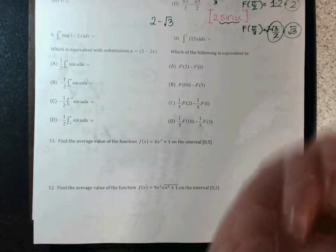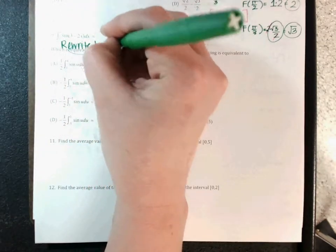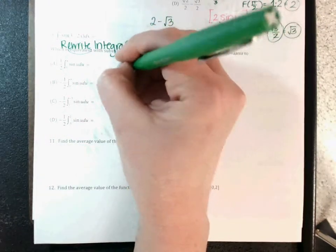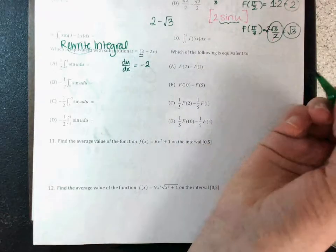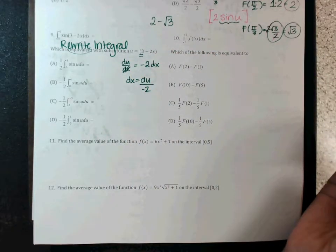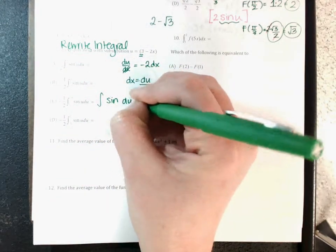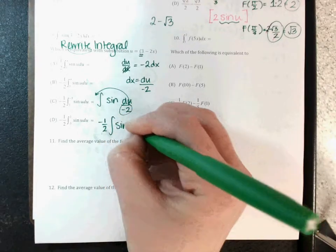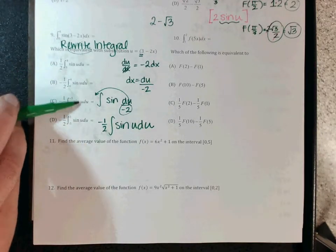Numbers nine and ten are similar to what's on your CBA. For number nine, they're asking you to rewrite the integral. They even give you u = 3 minus 2x. So du/dx is the derivative of (3 - 2x): derivative of a constant is zero, derivative of -2x is -2. Move dx up and -2 down, so dx = du over negative 2. Rewrite the integral: sine(u) du over negative 2, pull the over-negative-2 to the front: negative one-half integral of sine(u) du.